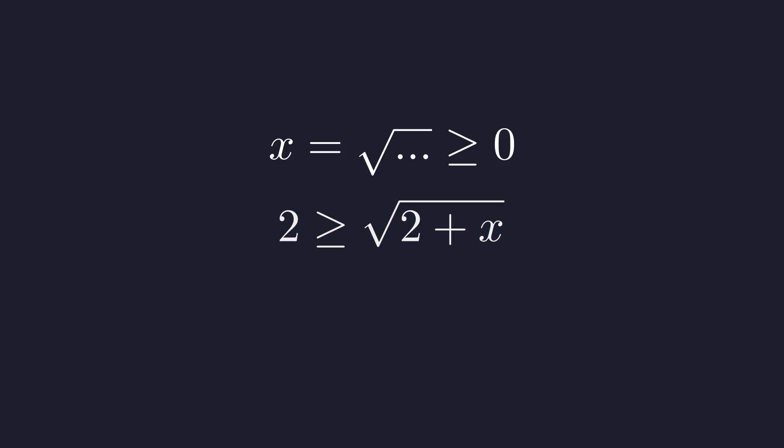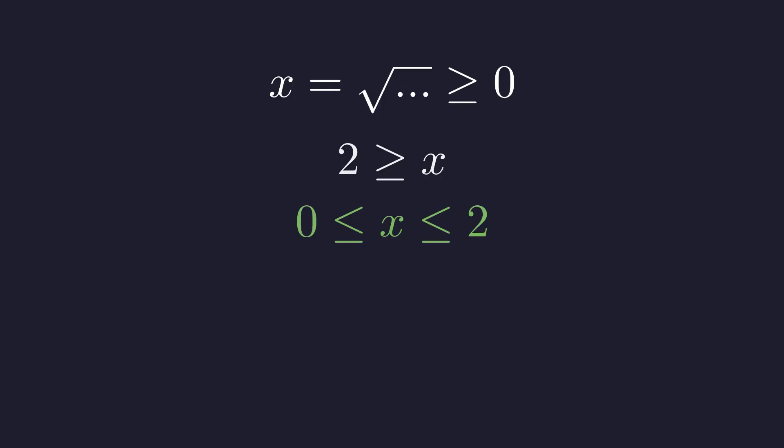Since both sides are positive, we can square them without changing the inequality. This gives us 4 is greater than or equal to 2 plus x, and subtracting 2 from both sides reveals our upper bound: x must be less than or equal to 2. Combining our conditions, we have a tight bound: x must lie between 0 and 2 inclusive.